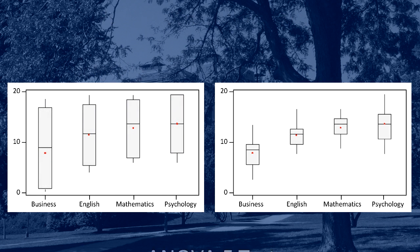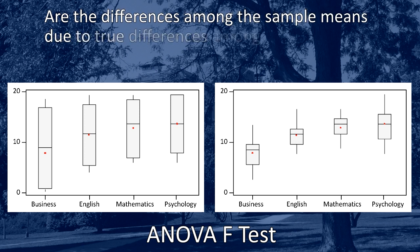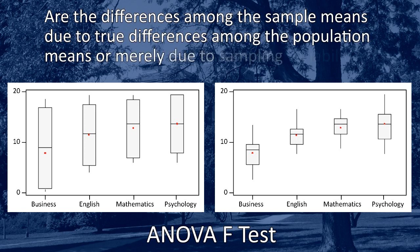The question we need to answer with the ANOVA-F test is, are the differences among the sample means due to true differences among the population means, or merely due to sampling variability? In order to answer this question using our data, we obviously need to look at the variation among the sample means, but that's not enough.